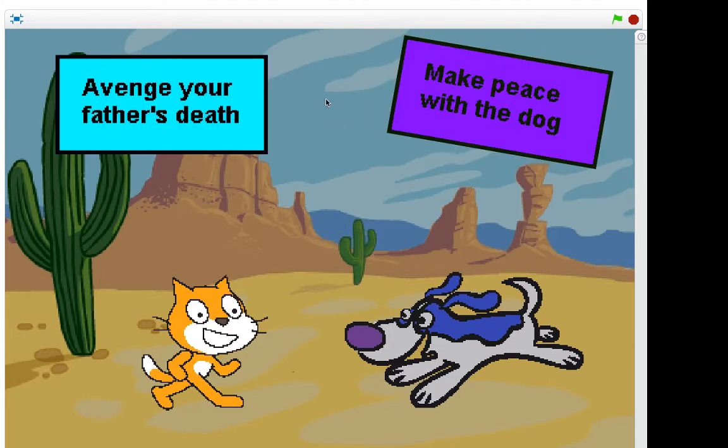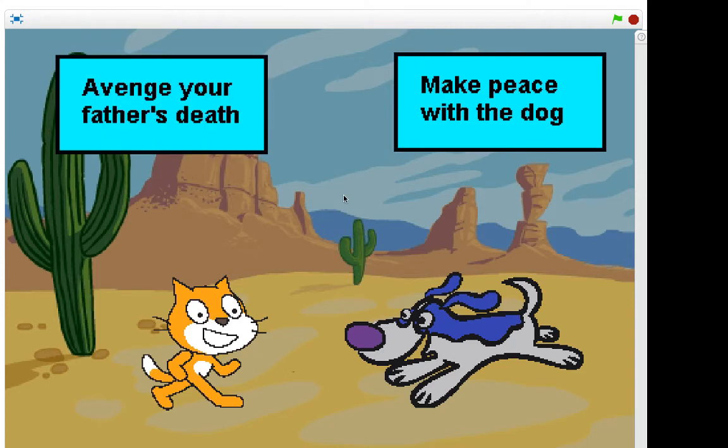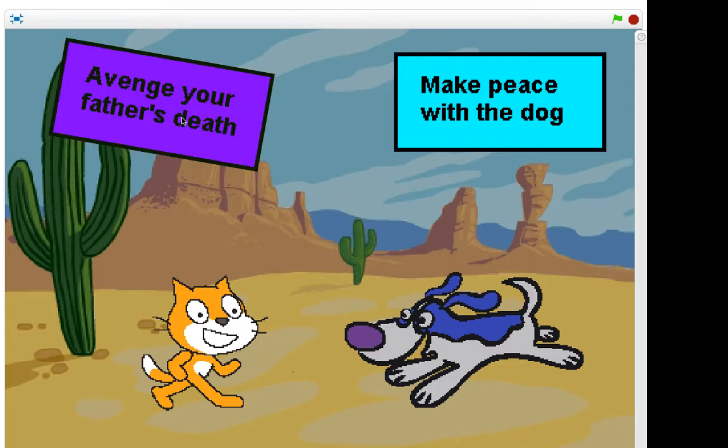These options are like, these are the tactile buttons here. And depending on what option you choose will produce a different story. So what should we do? Avenge our father's death or make peace with the dog. Avenge our father's death. All right. Here we go. Ready for this? Here we go. Avenging the father's death.